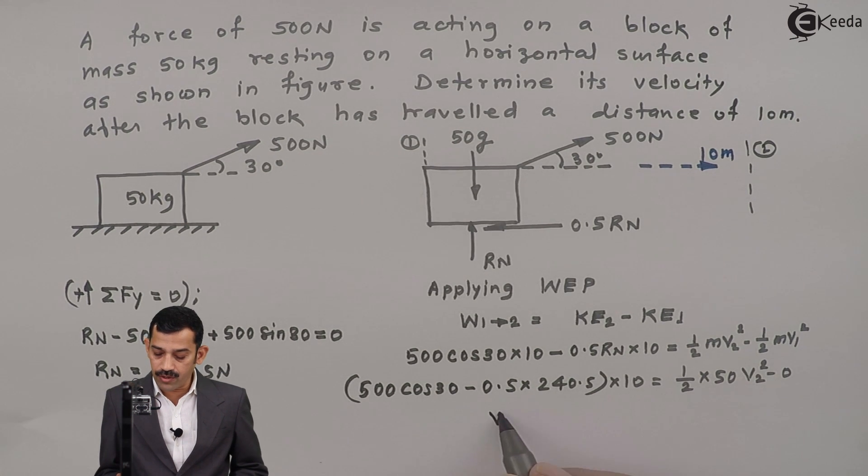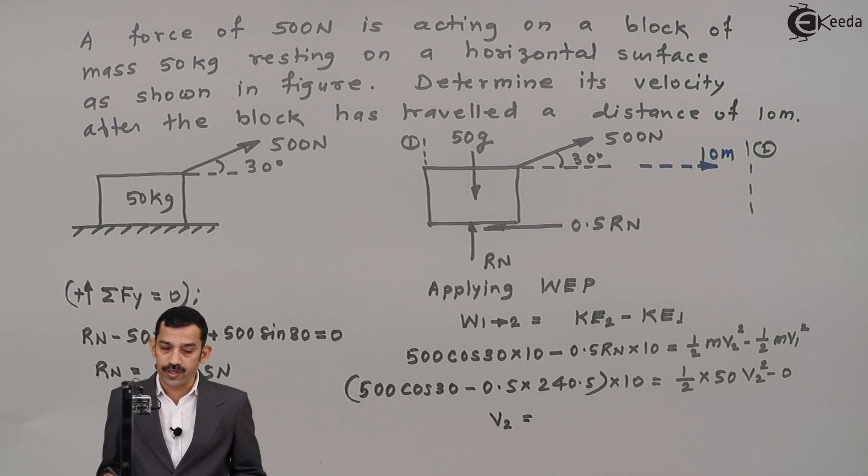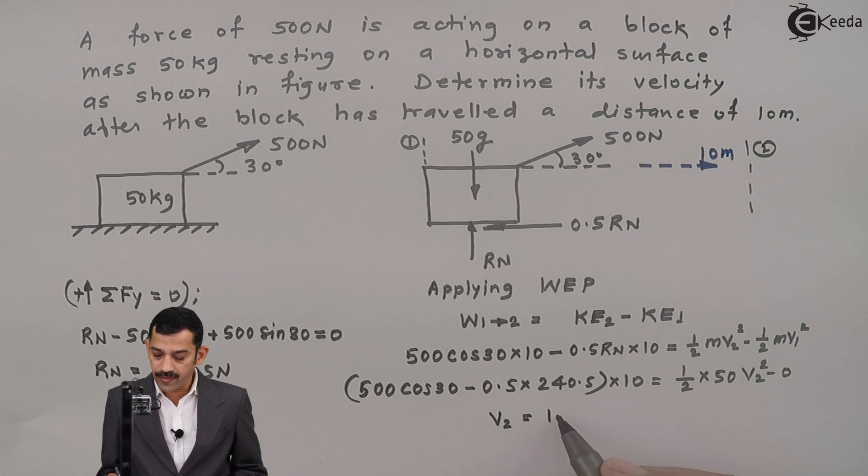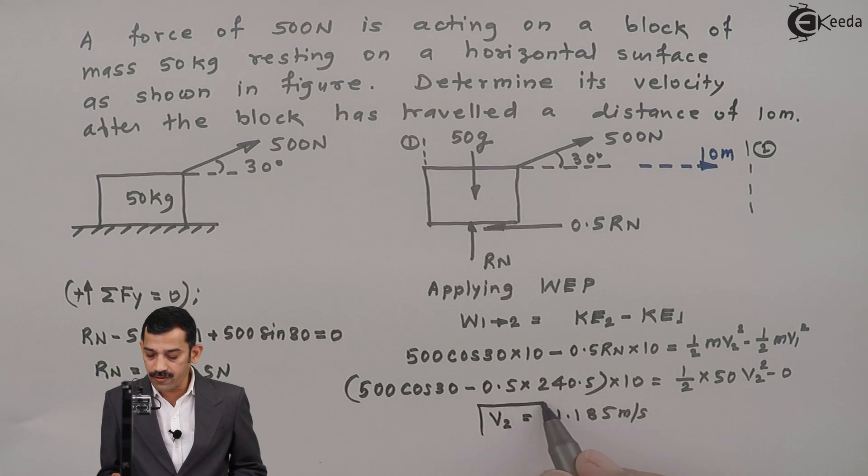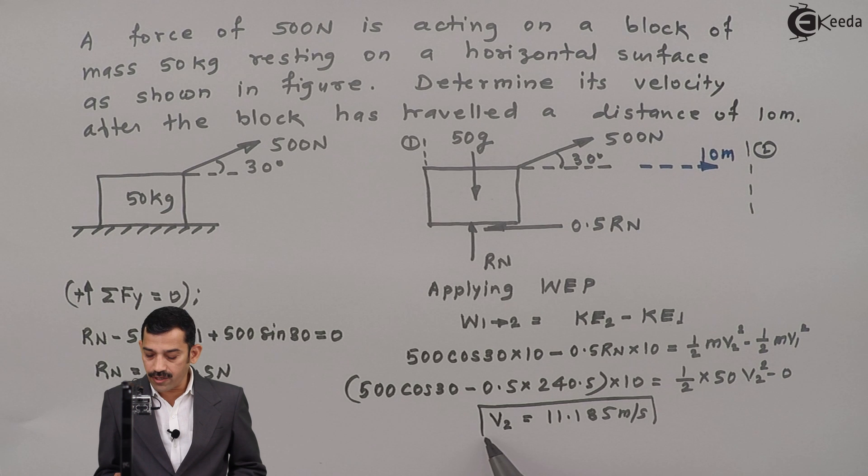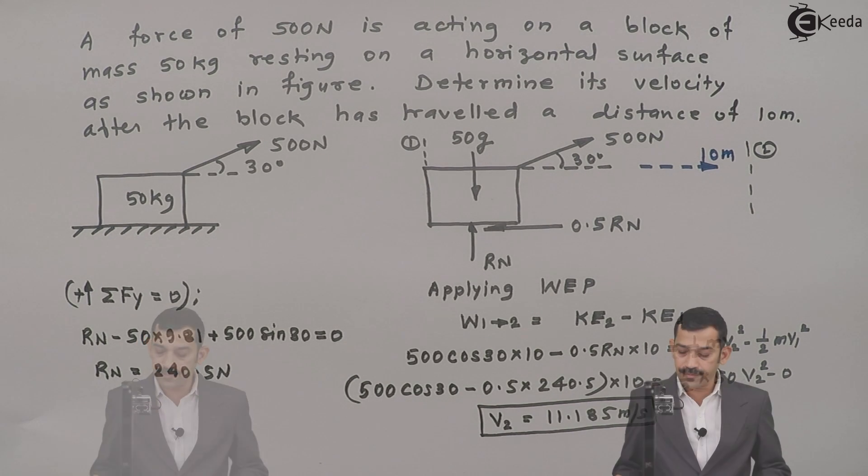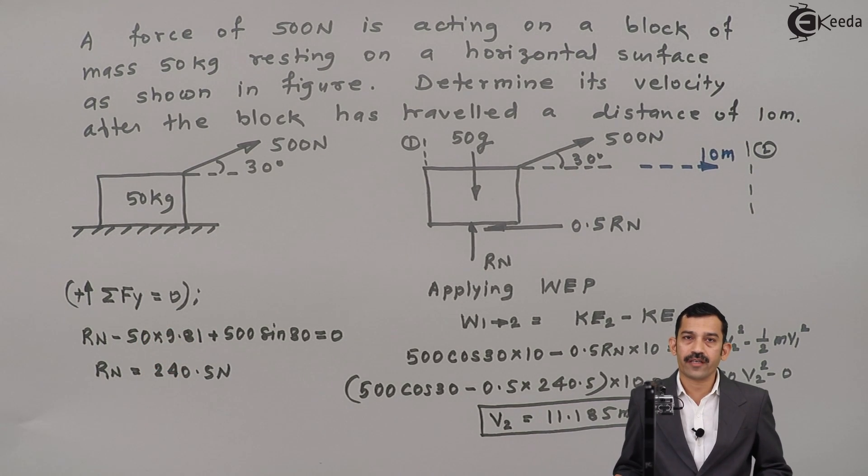That means unknown term is only V2. Easily we will get velocity of block after moving 10 meter. If we will calculate using calculator, this velocity comes out to be 11.185 meters per second. This is final velocity of block when block moves in rightward direction a distance of 10 meters. Thank you.